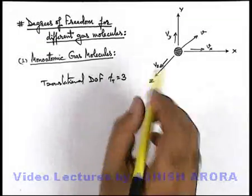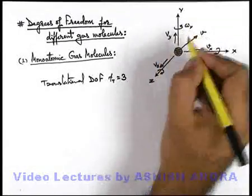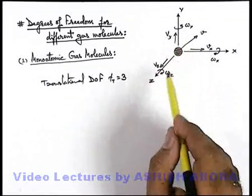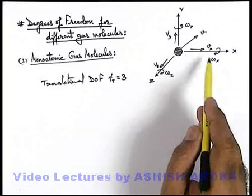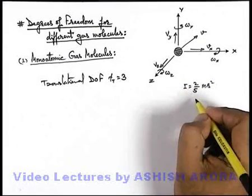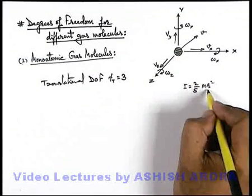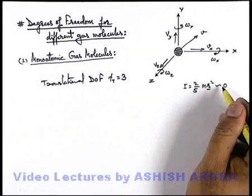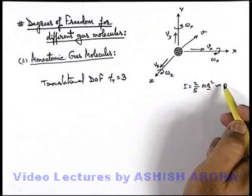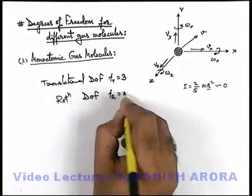If we talk about rotational energy, the monoatomic molecule can also rotate about x-axis, y-axis, and z-axis with angular speeds omega-x, omega-y, and omega-z. The rotational kinetic energy terms are half-I·omega-x², half-I·omega-y², and half-I·omega-z². However, taking moment of inertia I as two-fifths·m·r², and since the size of the gas molecule is negligible per the postulates of kinetic theory, r tends to zero. So moment of inertia is zero, meaning the molecule consumes no energy in rotational motion, and rotational degrees of freedom are zero.